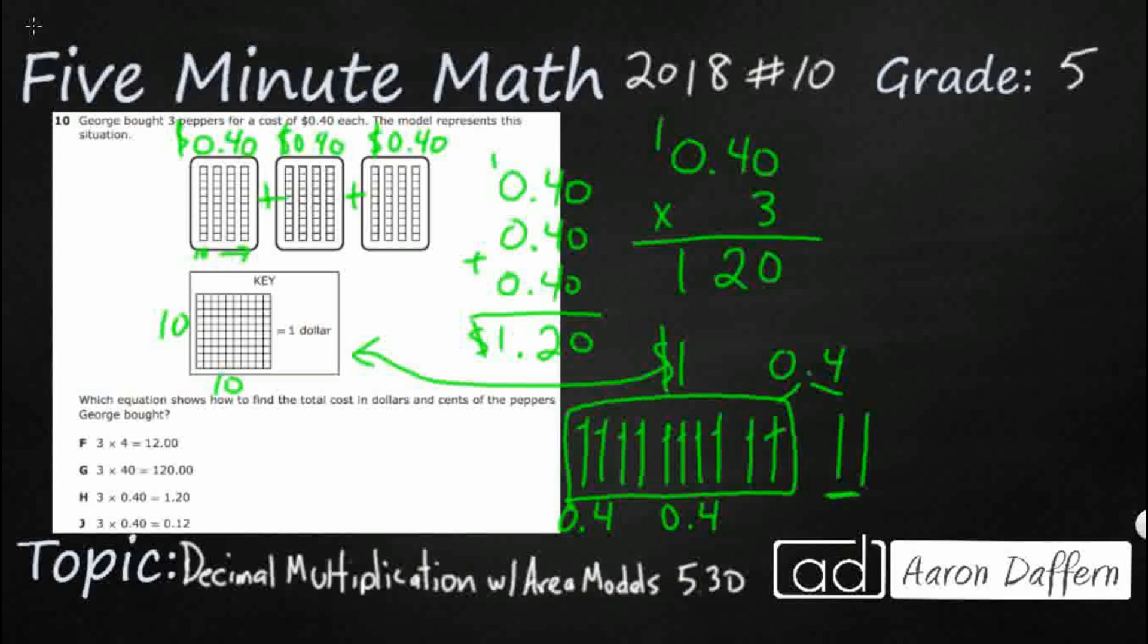And then I've got 20 left over. So it does seem like it's going to be that $1.20. So what do I do with this multiplication up here? Well, here is the trick with decimal multiplication.